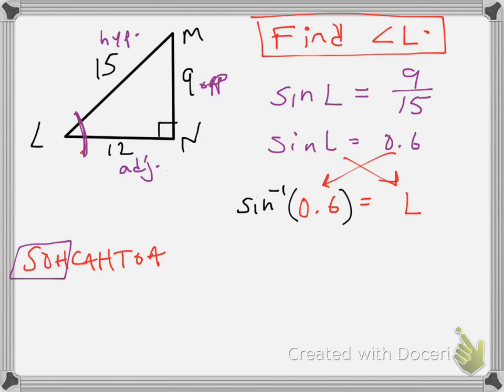So, not sine, but rather the inverse sine of 0.6 will equal angle L. So I'm going to type that in the calculator. Inverse sine, second sine in a degree mode calculator of 0.6 will give me 36.9 degrees. And there's angle L. That wasn't too bad.